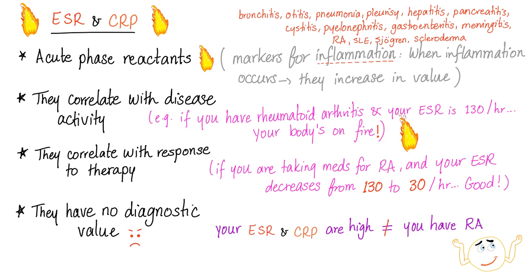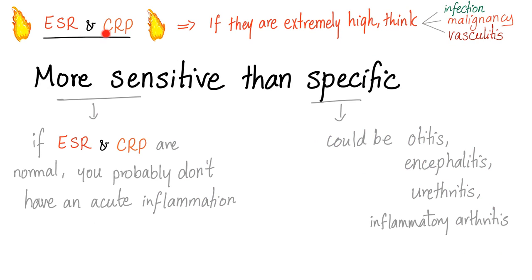However, ESR and CRP have no diagnostic value whatsoever. Just because your ESR and CRP are high doesn't mean you have RA. There are countless conditions that can raise or lower ESR, so you cannot diagnose based on these tests alone. If ESR and CRP are extremely high, think infection, malignancy, or vasculitis.